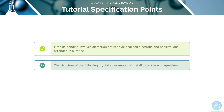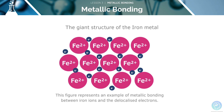Let's move on to our next specification point for this section, covering the crystal structures of metals. Iron is a metal that has a giant structure. As we can see here, there is a lattice of positive metal ions in a sea of delocalised electrons, shown here.